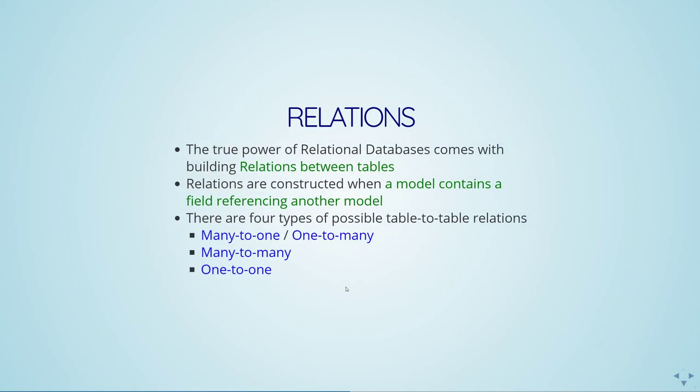Now we get to relations — this is where the true power of a relational database comes in. It allows you to specify how tables relate to each other. Relations are constructed when a model contains a reference to another model. There are four types of possible relations: many-to-one and one-to-many (which are two perspectives on the same relationship), many-to-many, and one-to-one. Let's go over each of these.